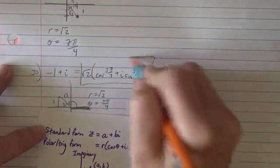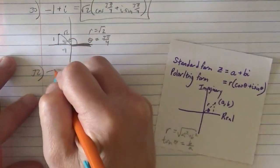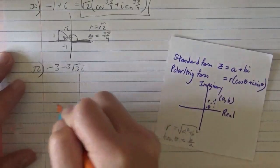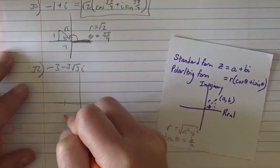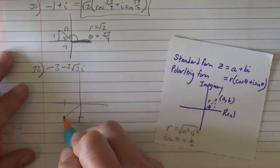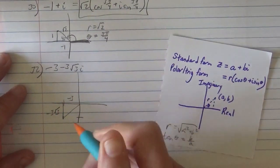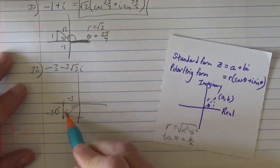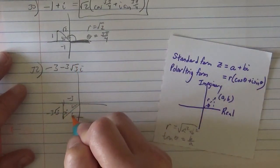That is our answer. We do it again. So 32, negative 3 minus 3 root 3 i. So we graph negative 3 on the x, negative 3 root 3 on the y. So negative 3, negative 3 root 3. Again, we kind of recognize this as a 30, 60, 90. The 30 is, the short side is 3. This is root 3 times that, so the hypotenuse must be a 6.